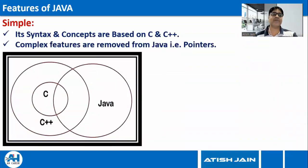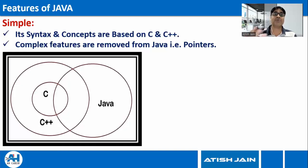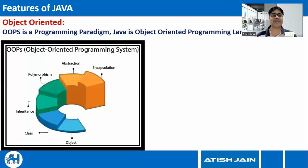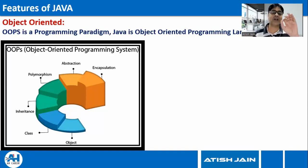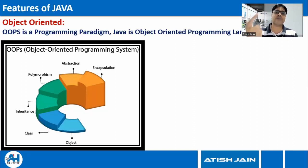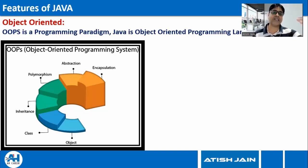Java is simple because its syntax is taken from C and its concepts are taken from C++. For people coming from a C and C++ background, learning Java will be quite easy. At least a knowledge of C language is mandatory before you begin your career in Java. Java is object-oriented — object-oriented programming is a paradigm or style of writing programs built on four pillars: encapsulation, abstraction, polymorphism, and inheritance. Classes and objects are the building blocks of object orientation.